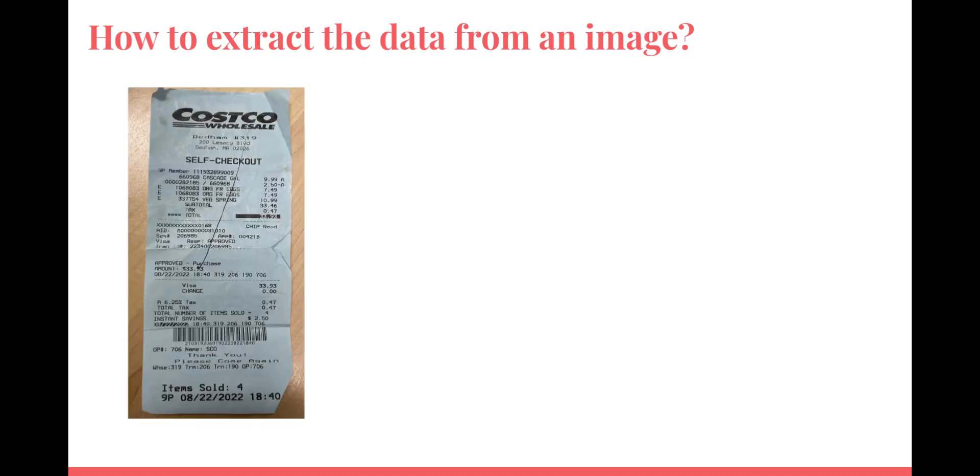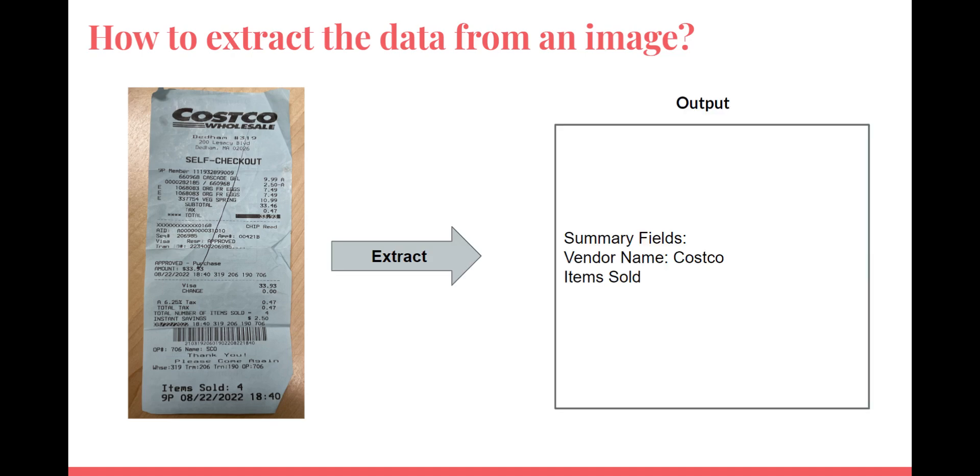Our task is to extract data from a grocery store bill image. Let's take Costco's bill for example. We want to build an app that will read the bill and convert the data values into a text file. As humans, we can easily interpret what the bill is about, but machines can't do this. So we have to make them think like humans.